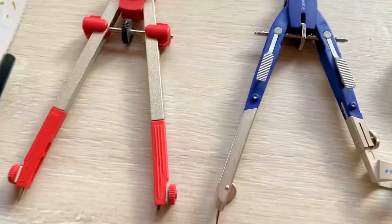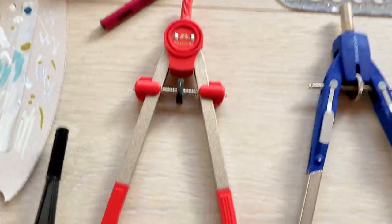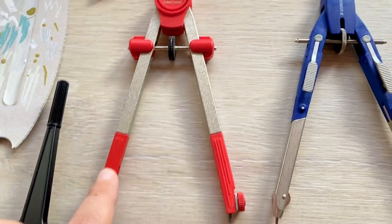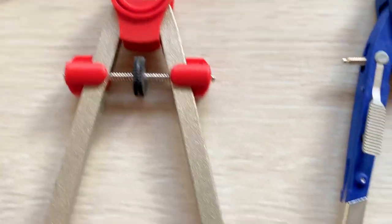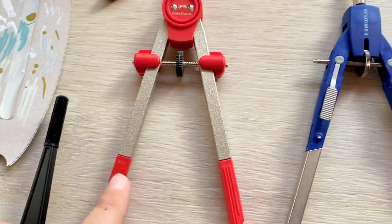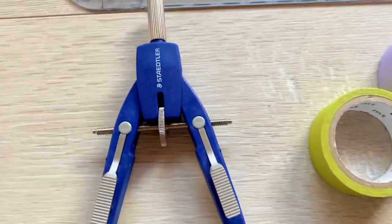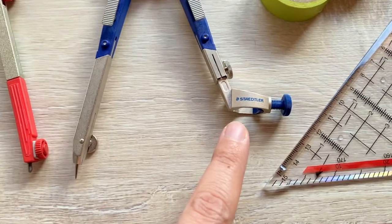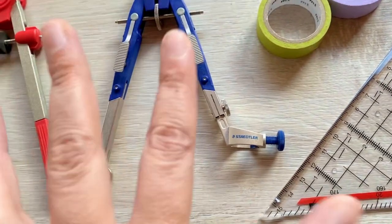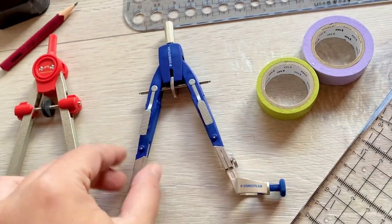And what else? Compass! This is one actually from my school times, it's Faber-Castell. It's not fancy but does the job. And this is a more fancy one, the Städtler one. And I also have an extension arm for this one so you can make really big circles with this.